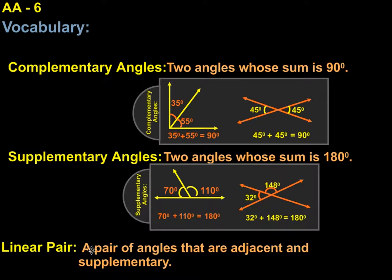And then a linear pair is a pair of angles that are adjacent and supplementary. And these also illustrate linear pair because we have two angles that have the same vertex, share a ray, and do not overlap. Same here, same vertex, share a ray, do not overlap, and they both equal 180 degrees.